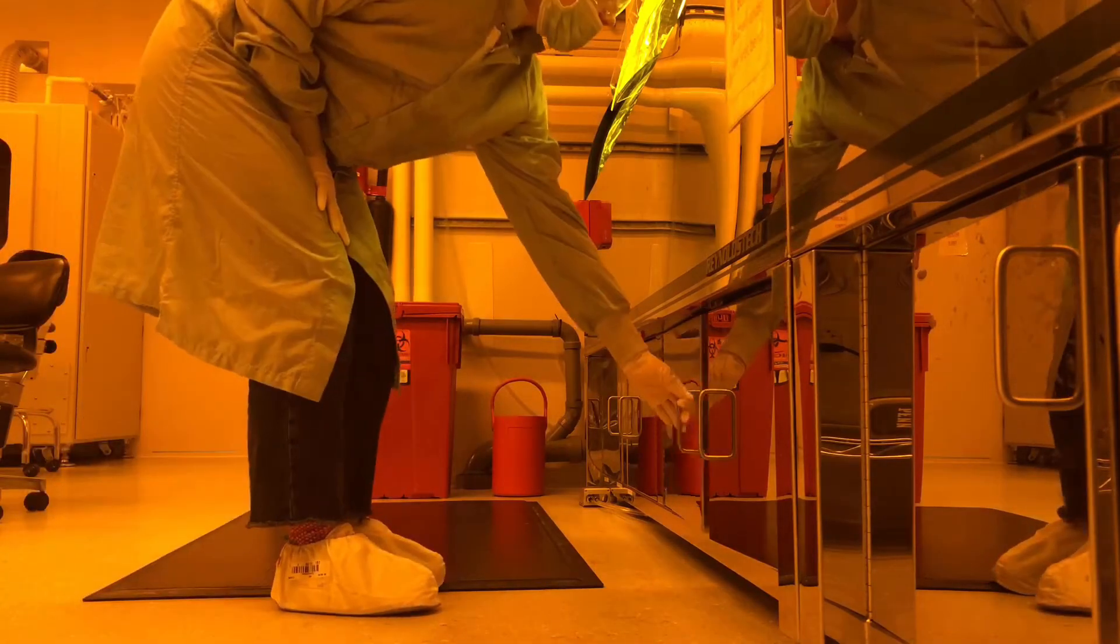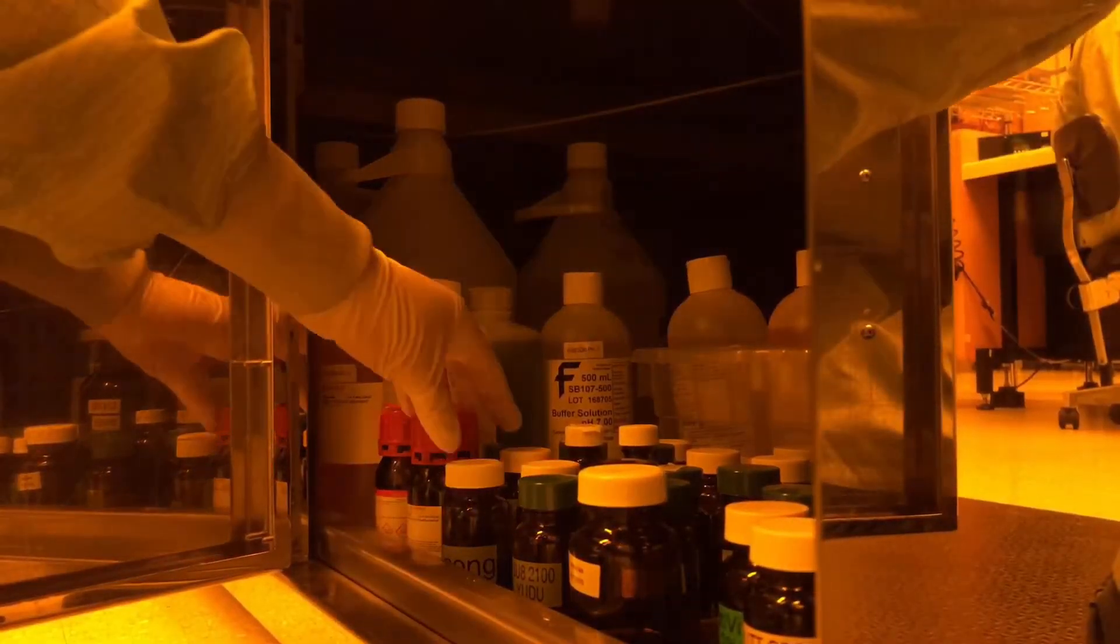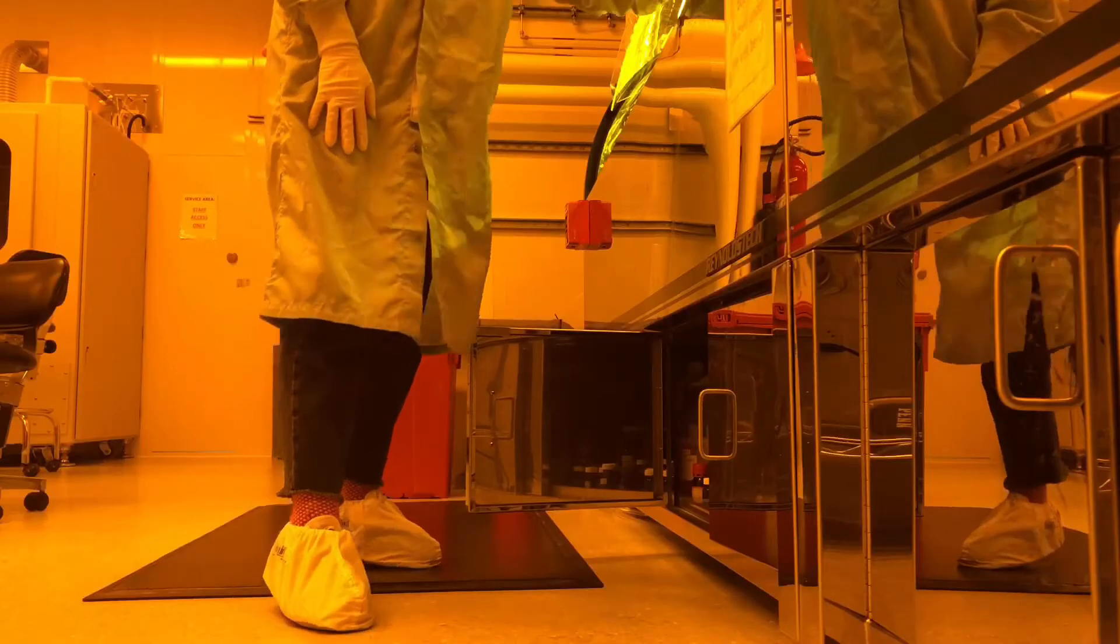Once inside, first look for the appropriate silane under the bench. It comes in a small bottle with a red cap.